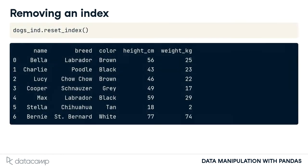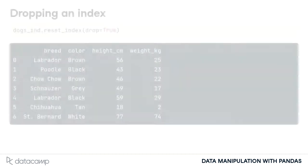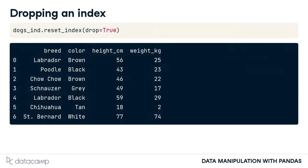To undo what you just did, you can reset the index — that is, you remove it. This is done via resetIndex. ResetIndex has a drop argument that allows you to discard an index. Here, setting drop to true entirely removes the dog names.